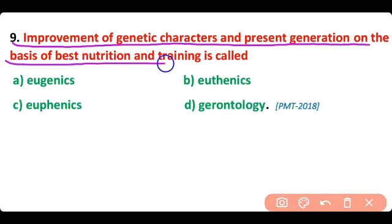Question number 9. The improvement of genetic characters in the present generation on the basis of best nutrition and training is called euthenics. So correct answer is option B.